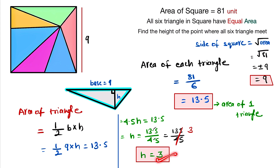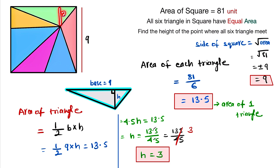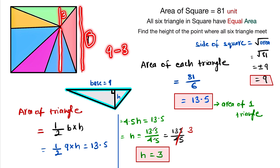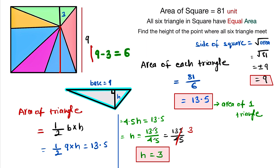This height of 3 is the distance from the top of the square down to the point where all triangles meet. So now we find the height of that point from the bottom. The height from the bottom equals 9 minus 3, which equals 6. The height of the point from the bottom is 6, and this is our final answer.